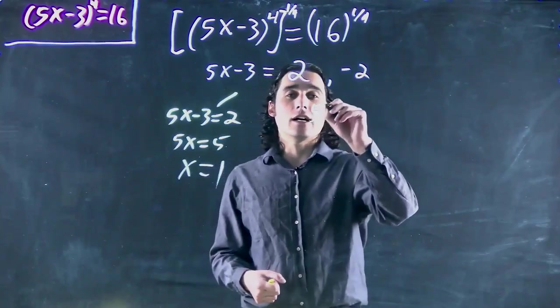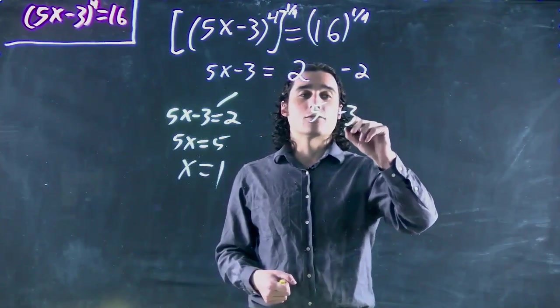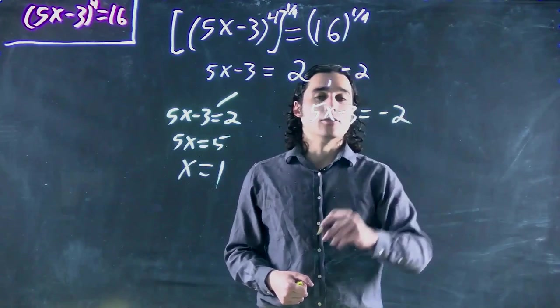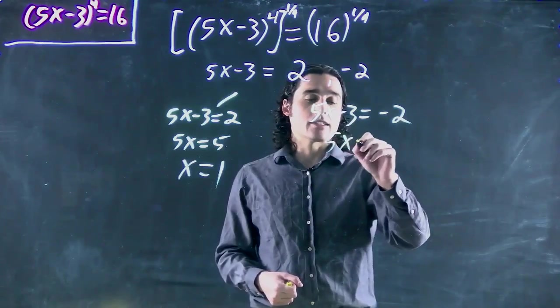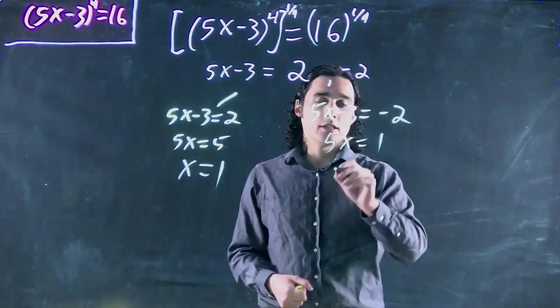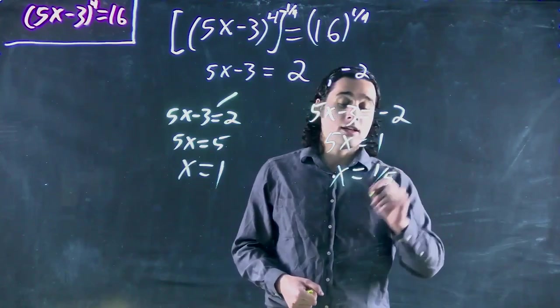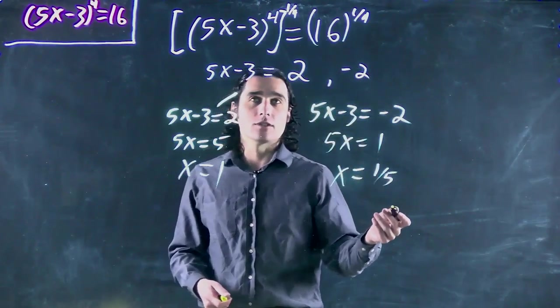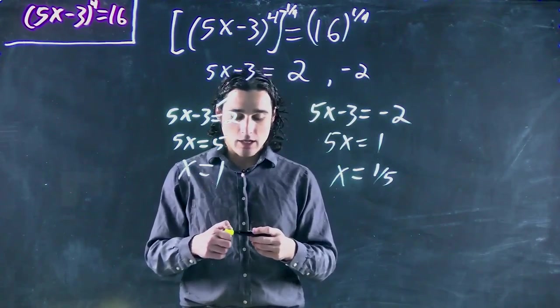Or 5x minus 3 equals minus 2, we have 5x equals 1 and therefore x equals 1/5. Two viable solutions to our problem. And we're done.